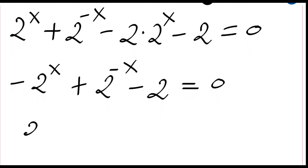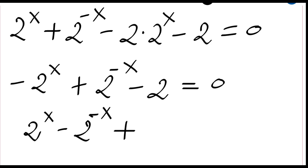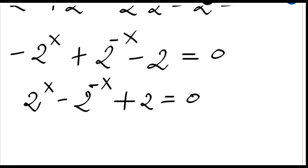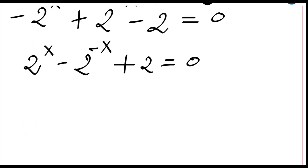Okay, now if I change the sign of all this equation, we just have 2 to the power x minus 2 to the power minus x plus two equal to zero. Now let me rewrite this.